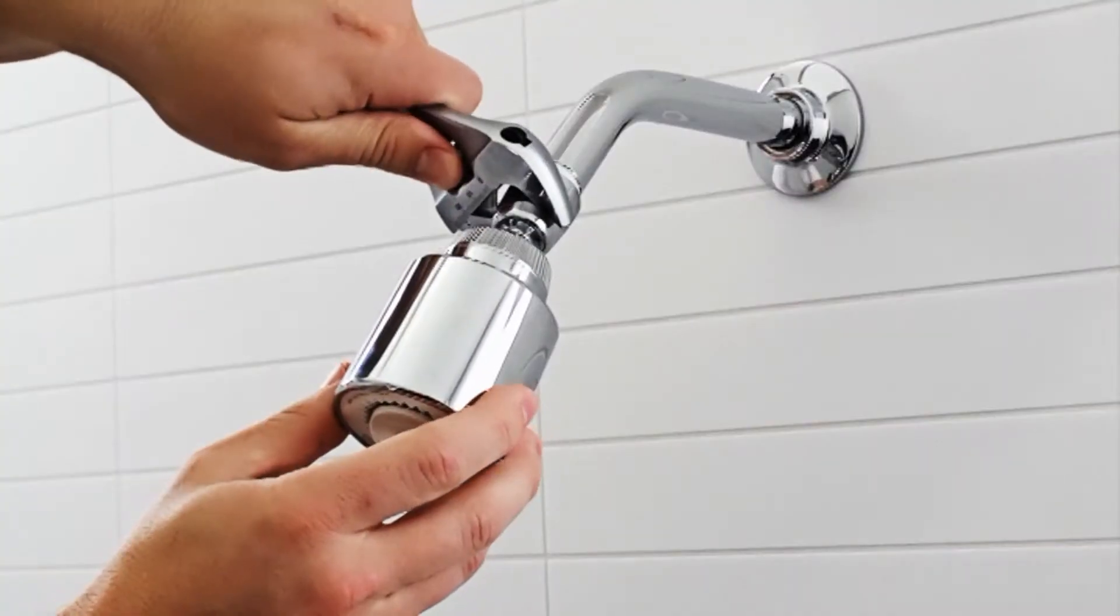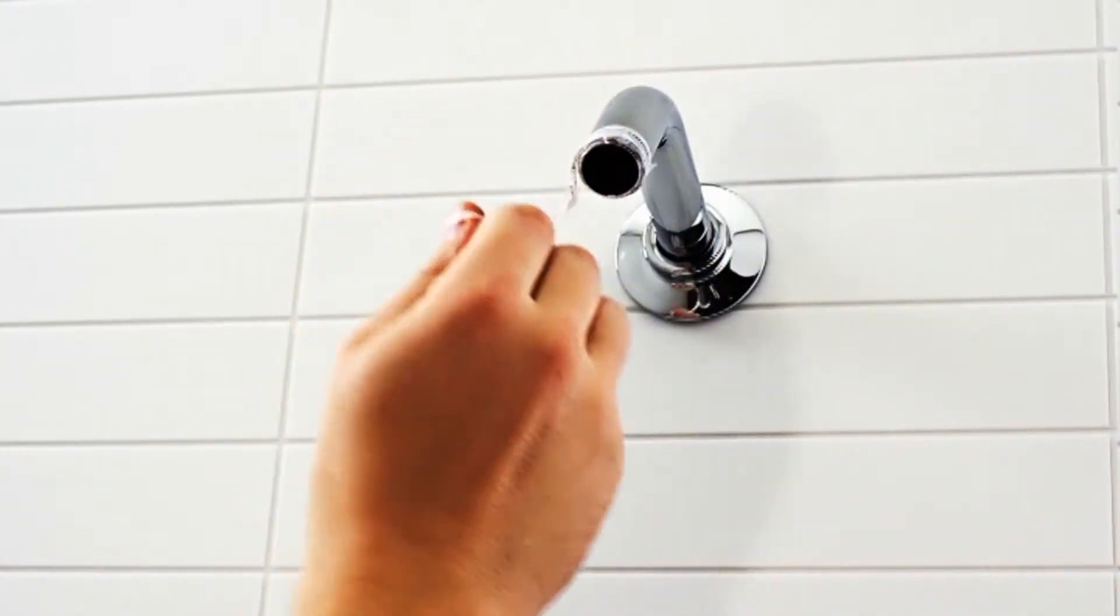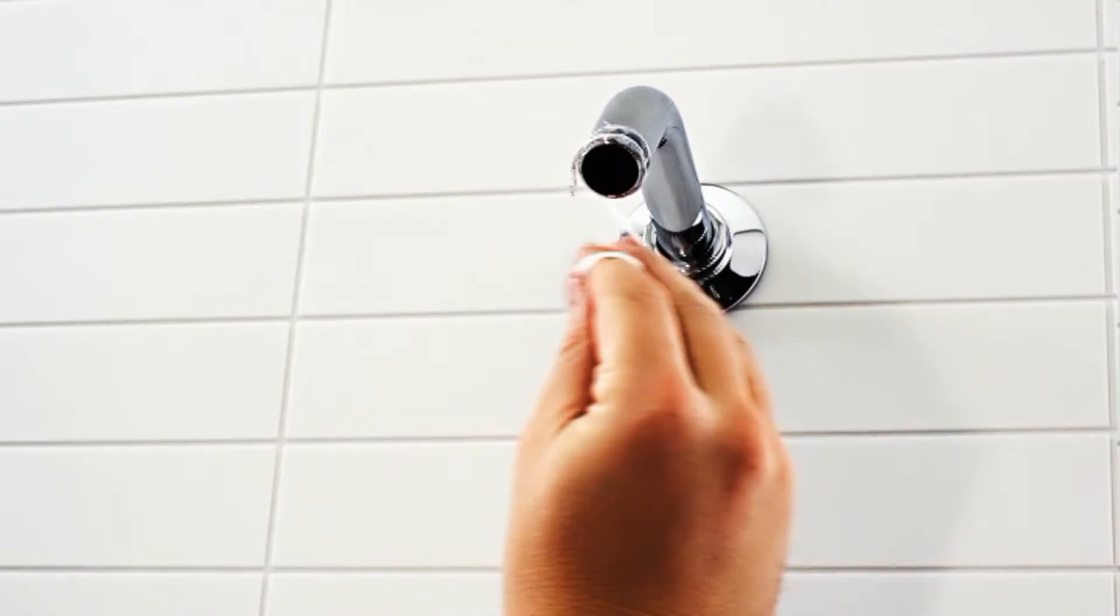Installation is easy. First, remove the old shower head by loosening the nut above the shower head. Then, remove any mineral deposits or old Teflon tape from the shower arm threads.